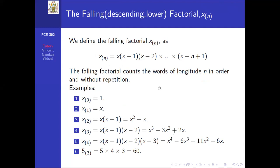For a specific example, when x=5 and n=3, the falling factorial is 5 times 4 times 3. Alternatively, substituting x=5 into the n=3 formula gives 5³ minus 3 times 5² plus 2 times 5, which equals 125 minus 75 plus 10 = 60. Wait — the instructor states the answer is 60.